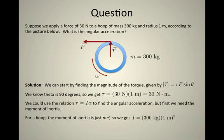For the hoop, the moment of inertia is just mR squared, and so we can calculate I is equal to 300 kilograms times 1 meter squared, or 300 kilogram meter squareds. Notice that's a compound unit.